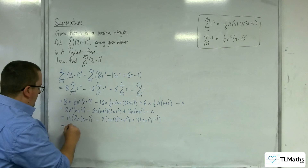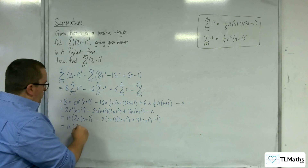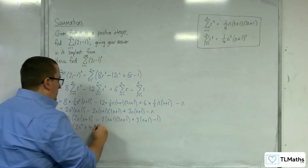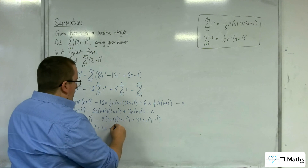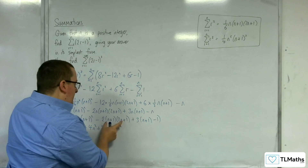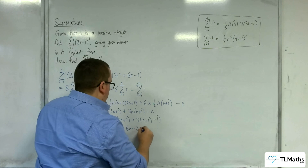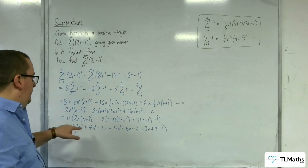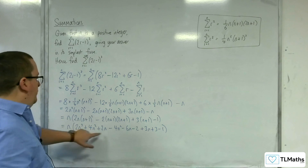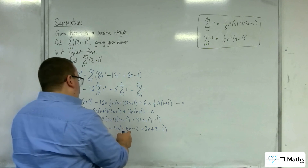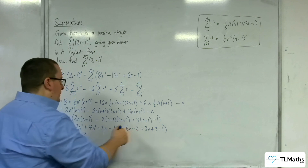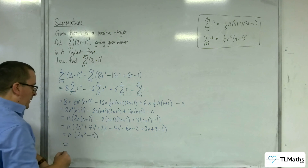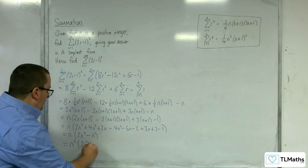Expanding inside the brackets: we get 2n³ plus 4n² plus 2n, take away 4n² take away 6n take away 2, plus 3n plus 3, take away 1. Collecting terms: 2n³; the 4n² terms cancel; 2n minus 6n plus 3n gives minus n; and minus 2 plus 3 minus 1 gives 0. So we can factor out another n, giving n²(2n² minus 1).